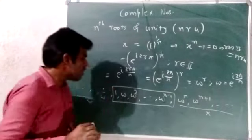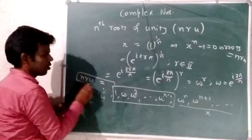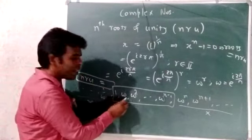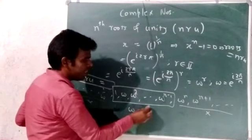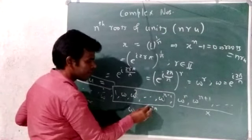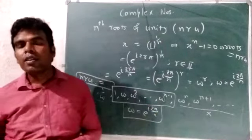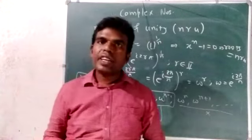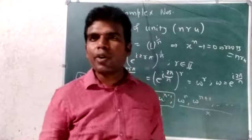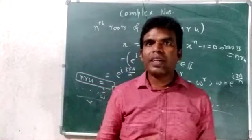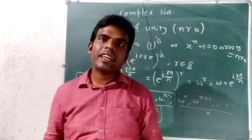Finally, the nth roots of unity are equal to: 1, omega, omega squared, ..., omega raised to n−1, where omega equals e raised to iota 2π upon n. These nth roots of unity values are now established, and their properties and geometric interpretation will help you solve questions.